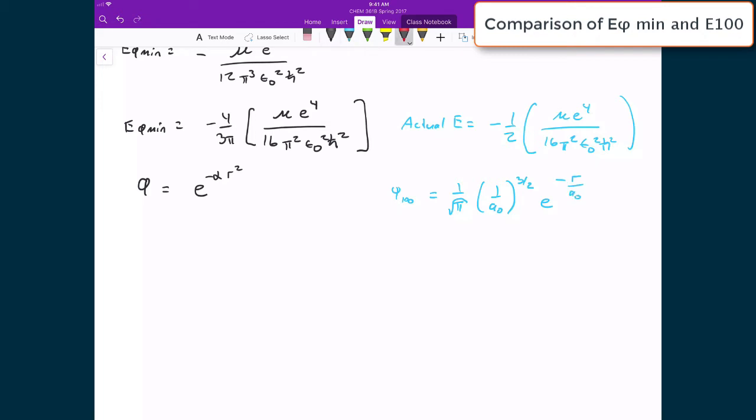And so what we can see here is that both of these terms, in terms of the energy, have all of these constants, and so the only difference is this negative one-half relative to this negative four over three pi. If I were to evaluate four over three pi into a decimal number, what I would get is 0.424.